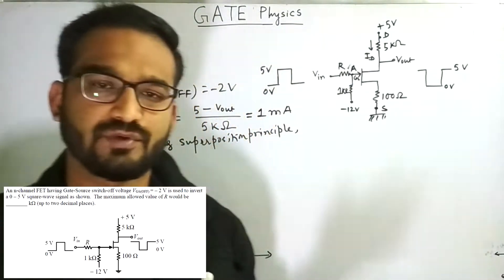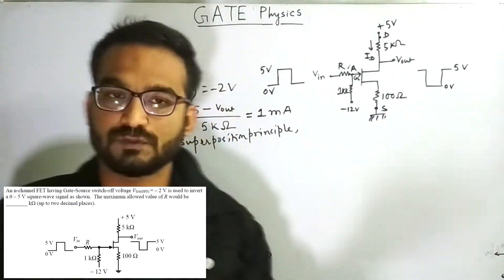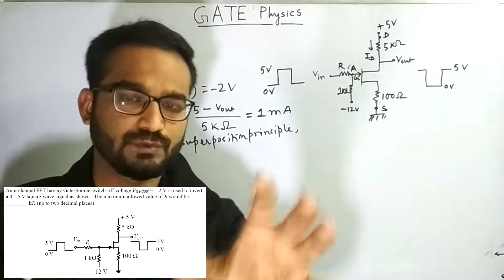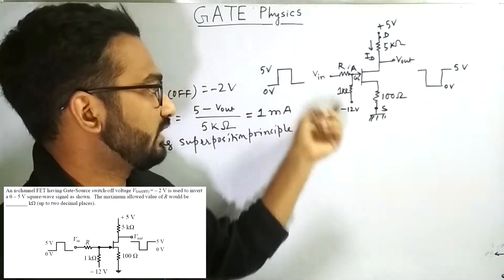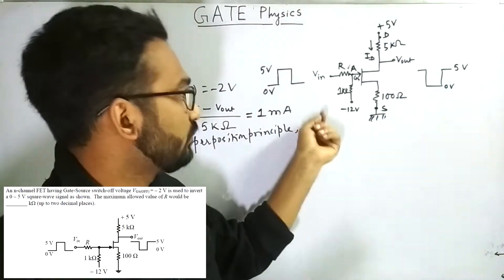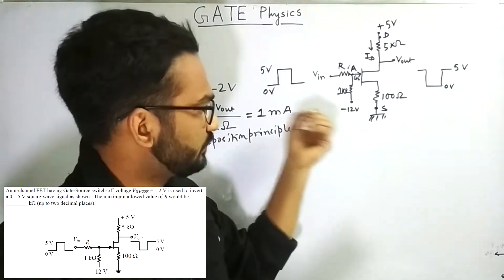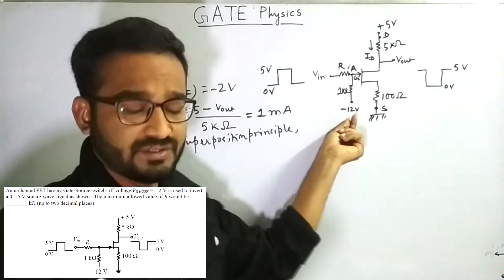So in superposition principle, what do you do? If you have multiple sources, then we keep one source at a time and you create other source to 0. So here you can see there are two sources, Vin and minus 12 volt.